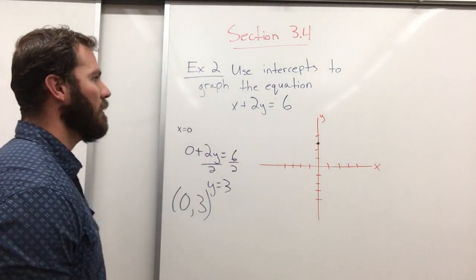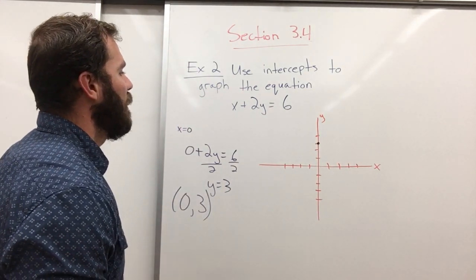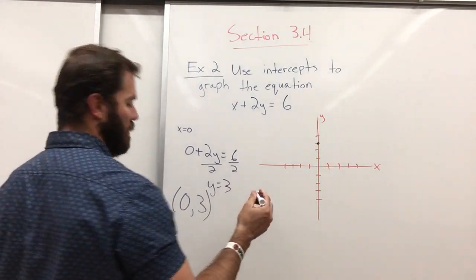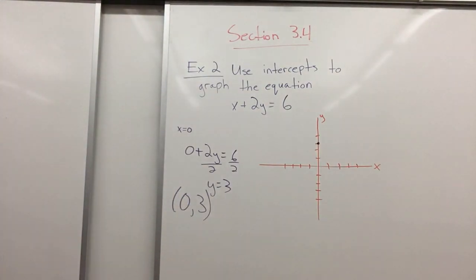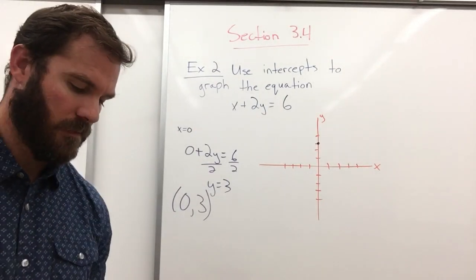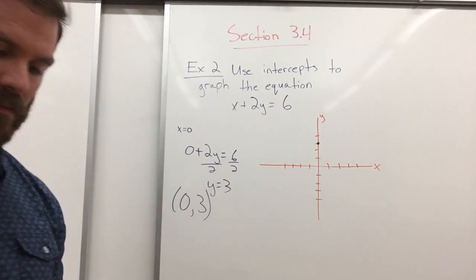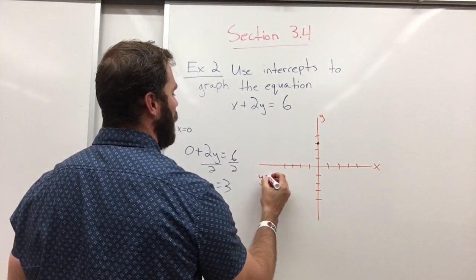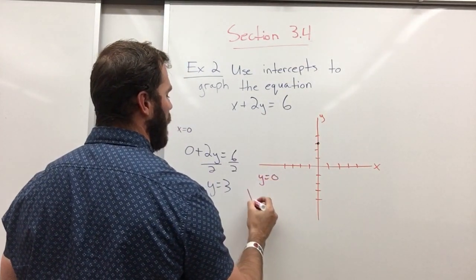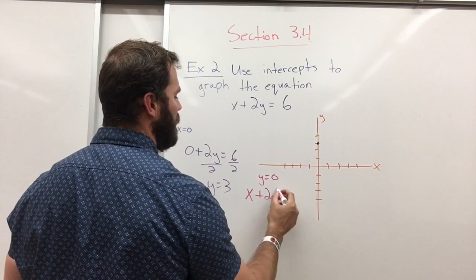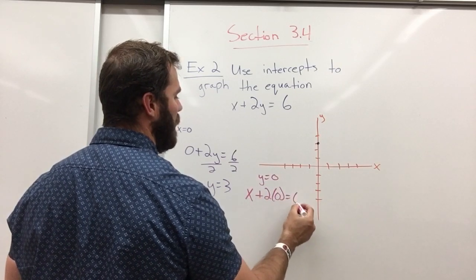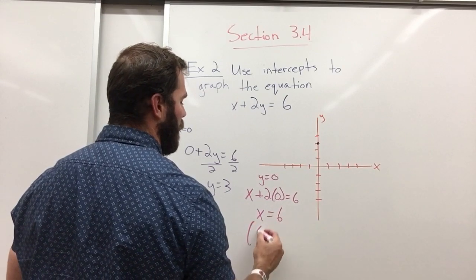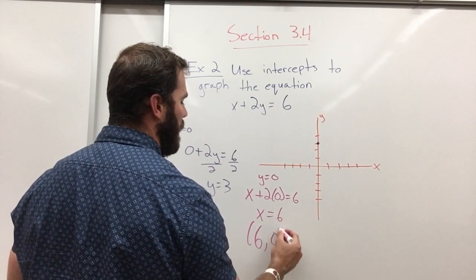Now let's find what x will be when we make y equal to zero. We're going to make y equals zero. So we have x plus two times zero equals six. x equals six.